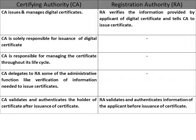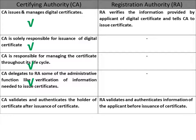Let us differentiate between CA and RA. CA issues and manages digital certificates, whereas RA verifies the information provided by the applicant of the digital certificate and tells the CA to issue the certificate. CA is solely responsible for issuance of the digital certificate and is also responsible for managing the certificate throughout its life cycle.